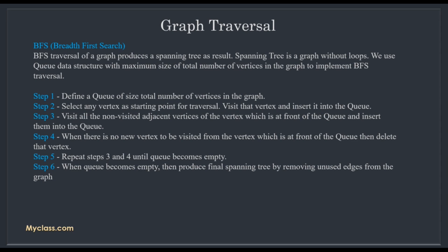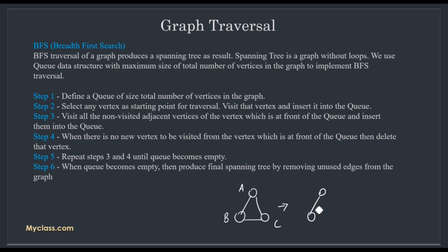BFS traversal of a graph produces a spanning tree as a result. For example, with a simple graph of three vertices A, B, C, we can remove some unwanted edges. By using just two edges, we can connect all three vertices — A connected with B, A connected with C — so without the extra edge we can still connect all vertices. This is called a spanning tree: a graph without loops.